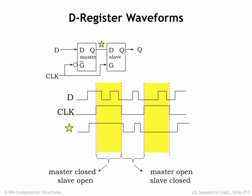On the rising edge of the clock, the master latch goes from open to closed, sampling the value on its input and entering memory mode. The sampled value thus becomes the output of the latch as long as the latch stays closed. You can see that the star signal remains stable whenever the clock signal is high. On the falling edge of the clock, the master latch opens and its output will then reflect any changes in the D input delayed by the TPD of the latch.